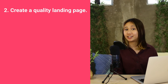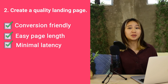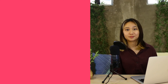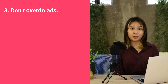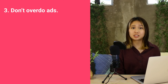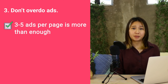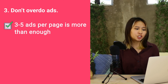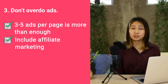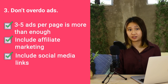Number two, create a great landing page. A good landing page will be conversion-friendly, with an easy page length and minimal latency. Number three, don't overdo ads. If Google senses that the percentage of content to ads is disproportionate, Google will show blank spaces instead of ads. To avoid this, three to five ads per page is more than enough. Publishers can also include affiliate marketing, social media links, and other offers to drive their advertising efforts further.